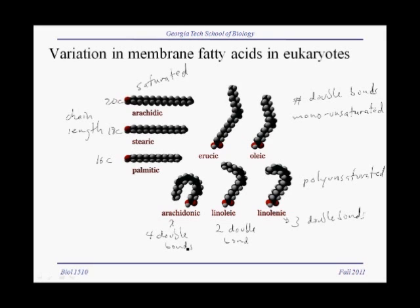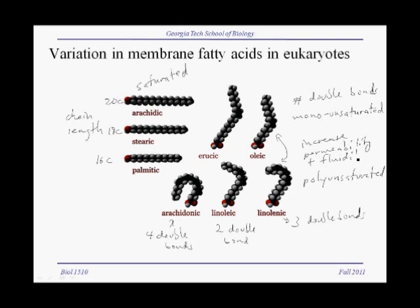A membrane with phospholipids consisting only of straight saturated hydrocarbon chains will pack together really well, forming a very rigid, impermeable membrane. When you start mixing in monounsaturated and polyunsaturated fatty acids, those chains cannot pack as well. They disrupt the packing and increase the permeability and fluidity of the lipid bilayer and the cell membrane.